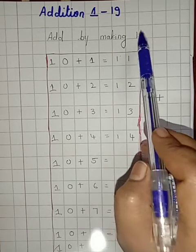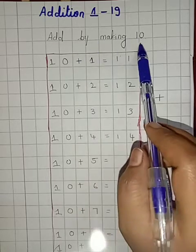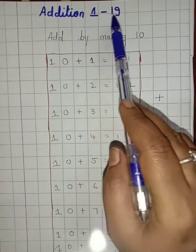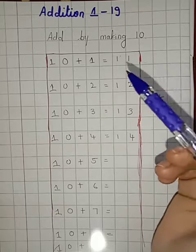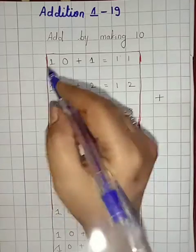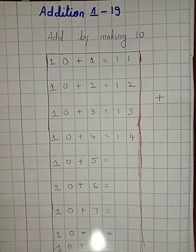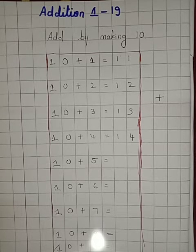So what does this concept tell us? Let us learn. Add by making 10 means whenever we get the numbers to add from 1 to 19, we have to separate the 10s and 1s. Example, in this given table they have separated the 10s and 1s — you all can see. So that is called add by making 10. You all have learned the 10s and 1s concept, so using the same concept we have to do addition here.